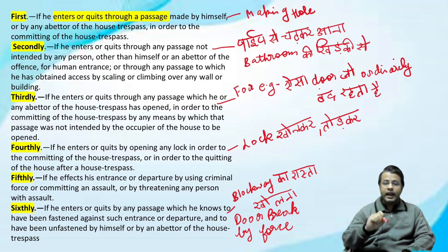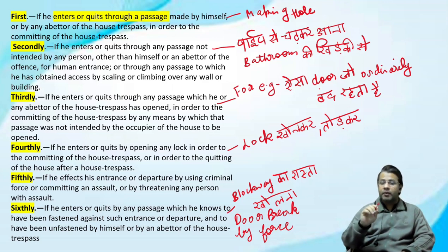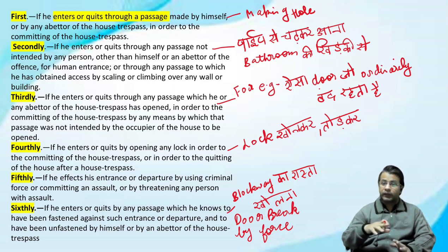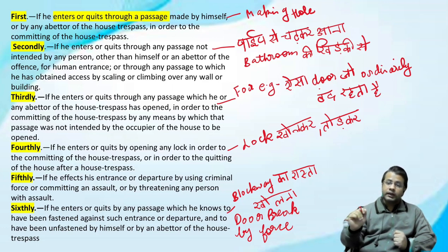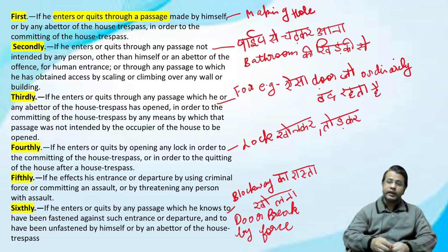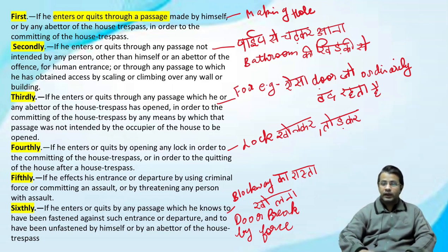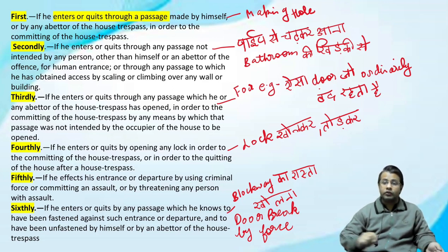Sixth: if he enters or quits by any passage which he knows to have been fastened against such entrance or departure, and to have been unfastened by himself or by an abettor of the house trespass — मतलब कि कोई एक रास्ता है जो blocked है, बंद है, उसको हम खोल दे रहे हैं — for example दीवाल चढ़ी, लम्बी ऊँची दीवाल है — या फिर exit करते हैं — तो यह housebreaking हो जाएगा।